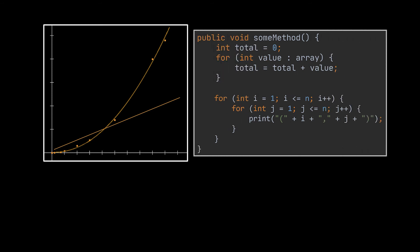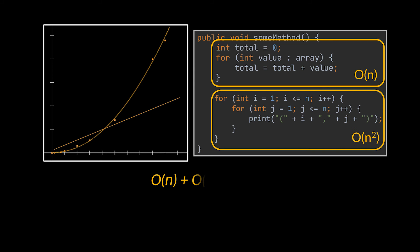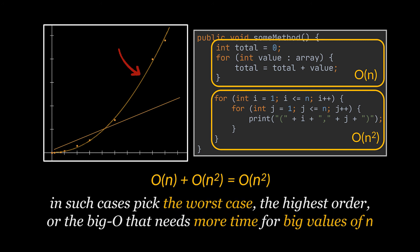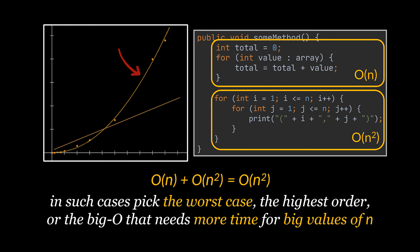If we revisit our two examples and consider that both are present in the same code block, what will the worst-case Big O of that method be? The first code block alone has O(n) and the second has O(n²), so the total time complexity is O(n) + O(n²). Since Big O represents the worst-case complexity — the highest order — we pick the worst of the two cases, which varies faster with respect to time. That is of course O(n²).